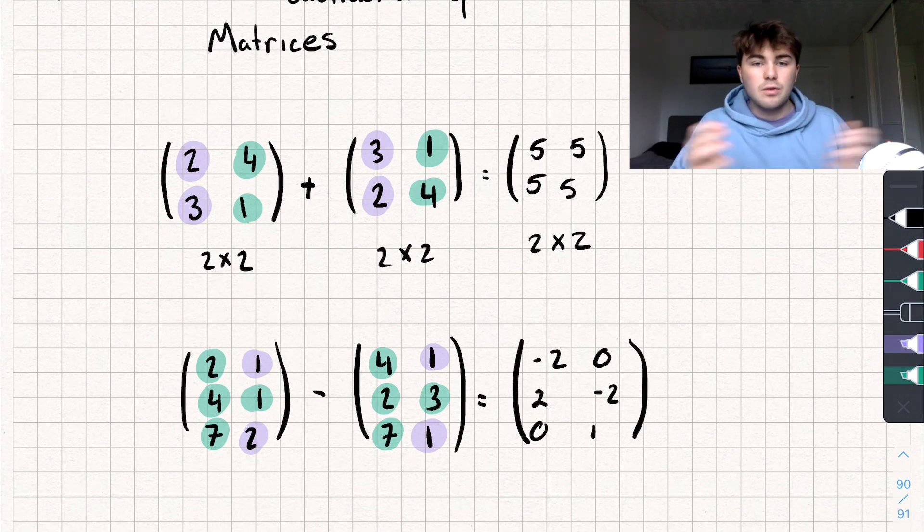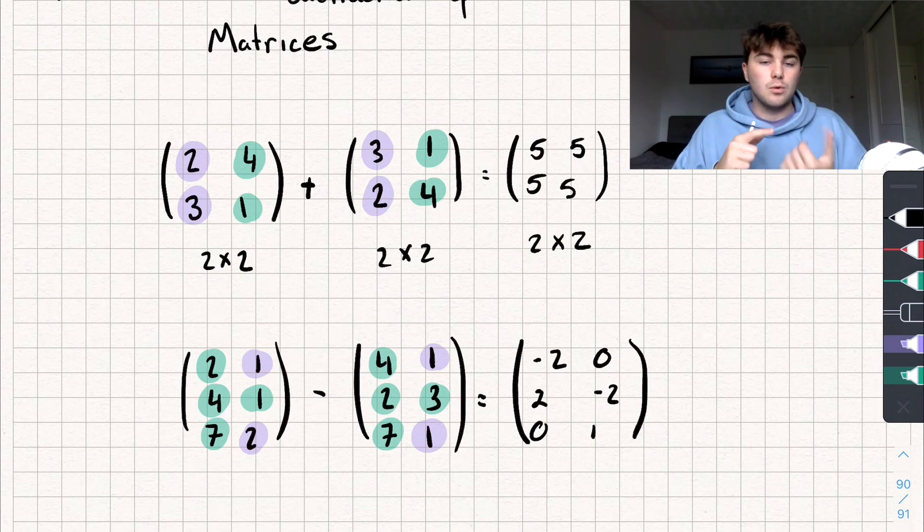So that is literally how we do matrix addition and subtraction. One thing to note is that matrix addition is what we call associative and commutative. So what does that mean?